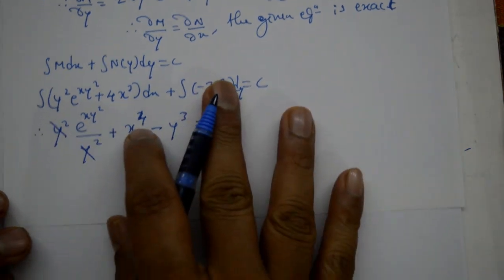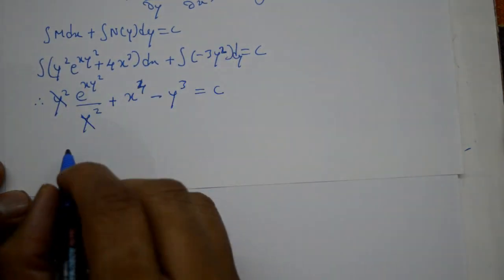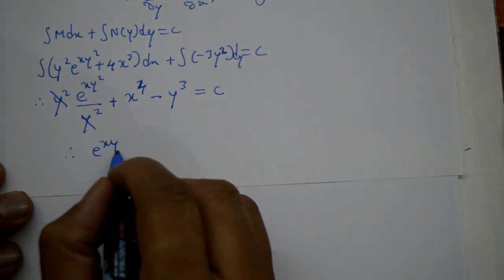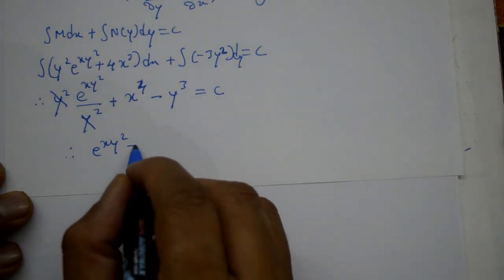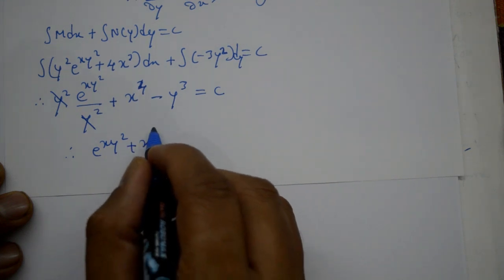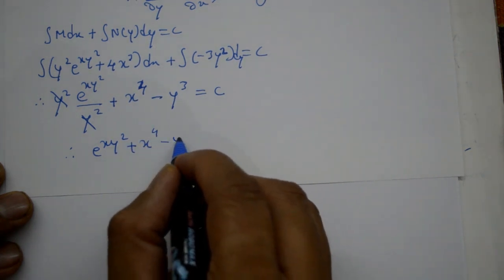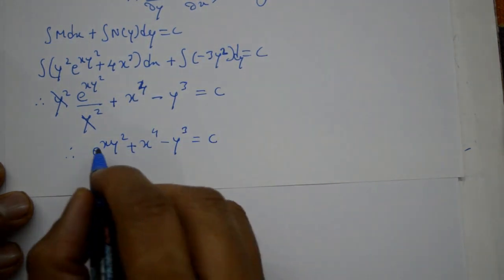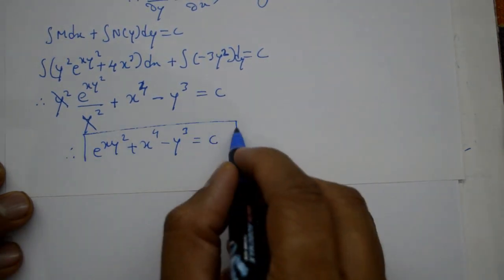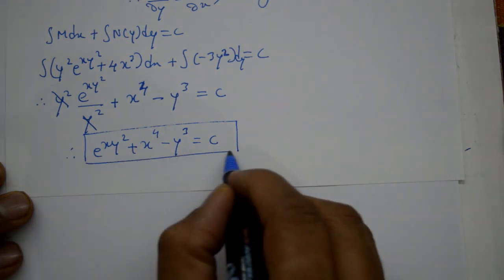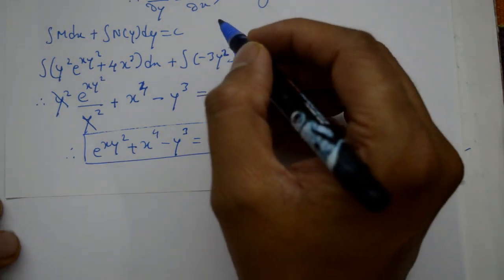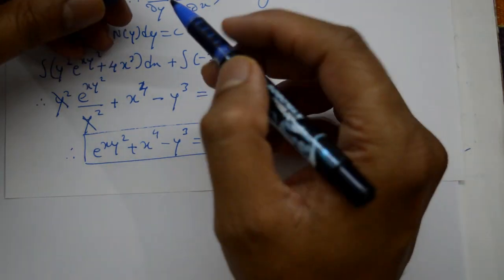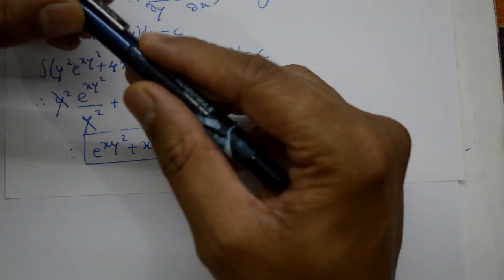y² aur y² cancel ho gaya. Therefore final solution: e^(xy²) + x⁴ − y³ = c. This is the required solution. Agar aapko video pasand hai, subscribe karo, like karo, comment karo. Thanks for watching.